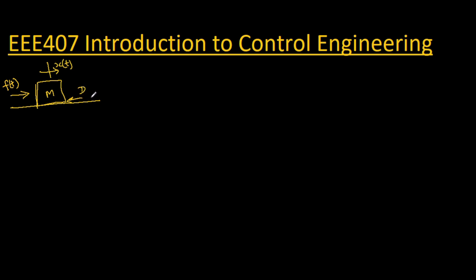Let's call the friction coefficient D. Now, if we want to write a mathematical expression for the system, just like Kirchhoff's voltage law talks about equilibrium, mechanical systems also have equilibrium. D is a coefficient describing how much friction there is. Multiplying D by the velocity dx/dt gives us the friction force opposing the applied force at any point in time.